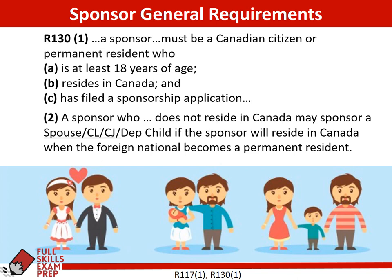A sponsor who doesn't live in Canada can still sponsor a spouse, common law partner, conjugal partner, or dependent child — as long as the sponsor will reside in Canada when the foreign national becomes a permanent resident. So if a couple is living outside Canada in another country, and the sponsor is at least 18 and has filed a sponsorship application, they can still apply from outside Canada. The difference is that the sponsor has to be living in Canada when the spouse, common law partner, or conjugal partner activates their permanent residency.